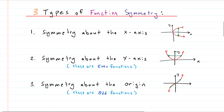The first type is symmetry about the x-axis, where the x-axis functions as a mirror and whatever happens above it is mirrored exactly below. Equations that exhibit x-axis symmetry are not technically functions because they don't pass the vertical line test — a vertical line would touch the curve in more than one spot. But it is a type of symmetry that exists, so we cover it here.